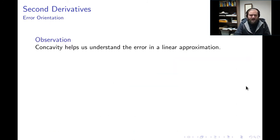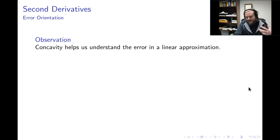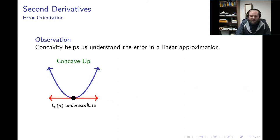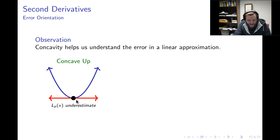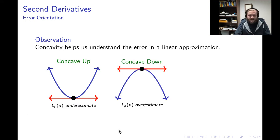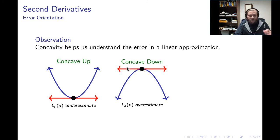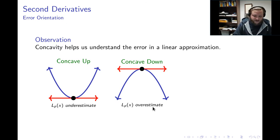Another thing we can use second derivatives for is orienting our error in a linear approximation. If we know the concavity, we can determine in which direction we're off. If you use a linear approximation for a concave-up function, you can be reasonably confident it will be an underestimate — the tangent line lies under the curve. The situation is exactly the opposite for a concave-down function: the tangent line is above the curve, so you can expect the linear approximation will be an overestimate.